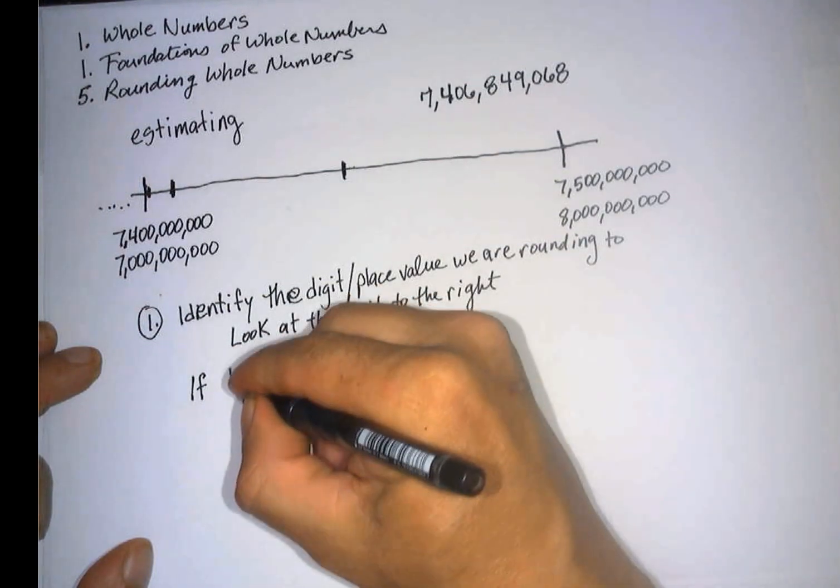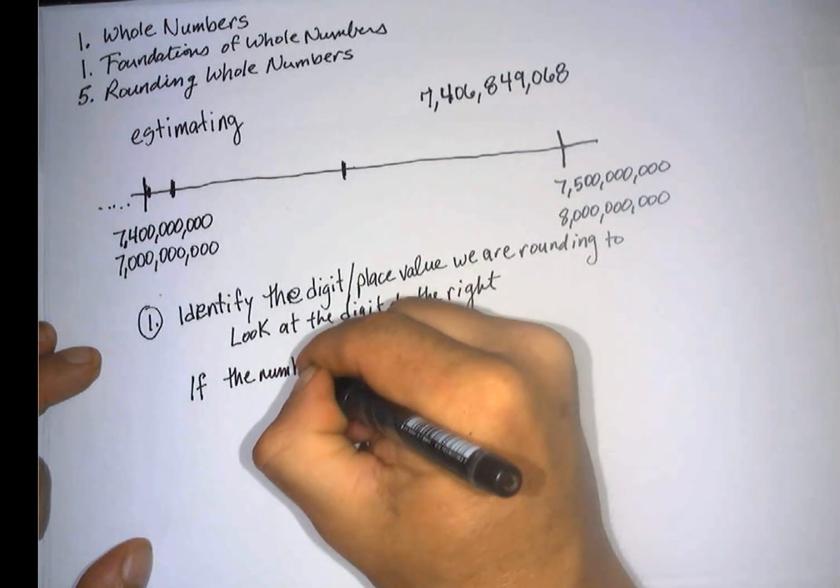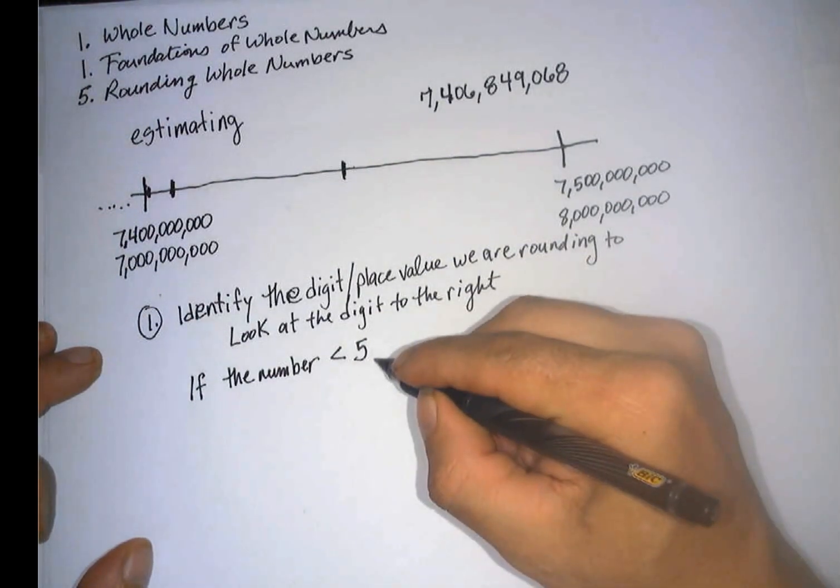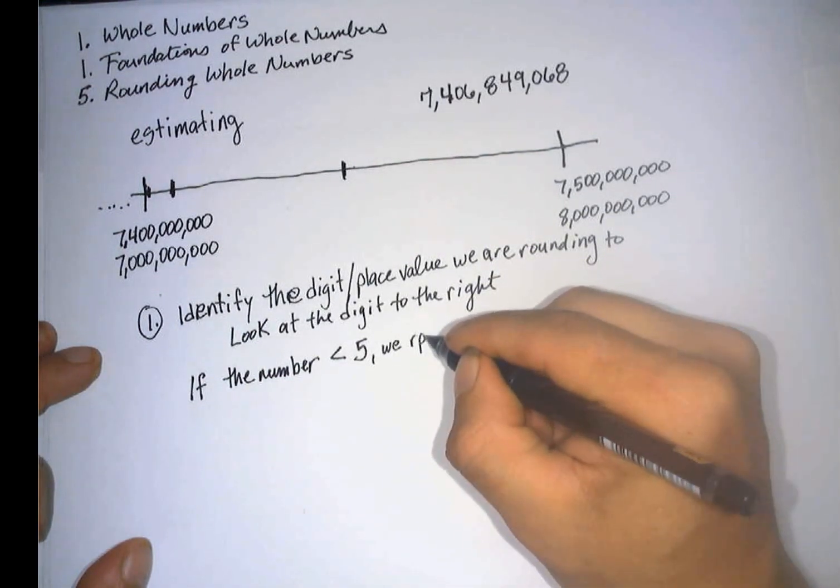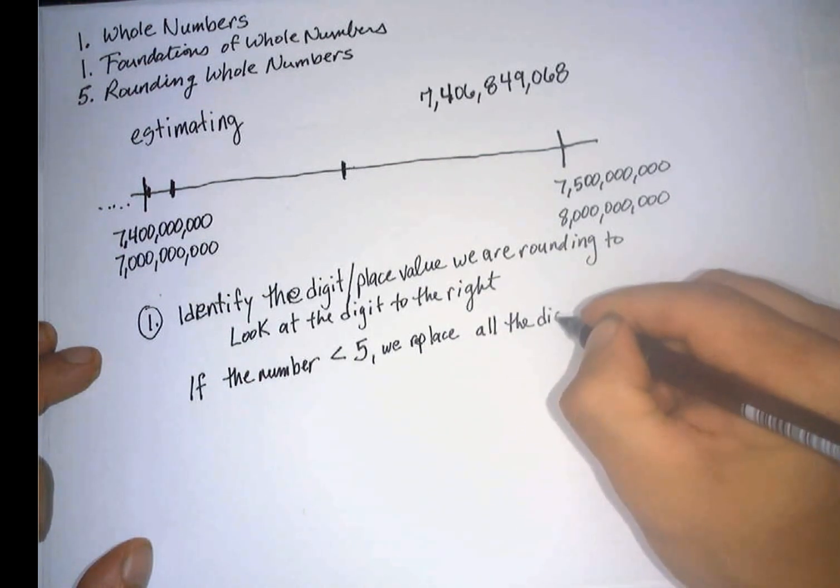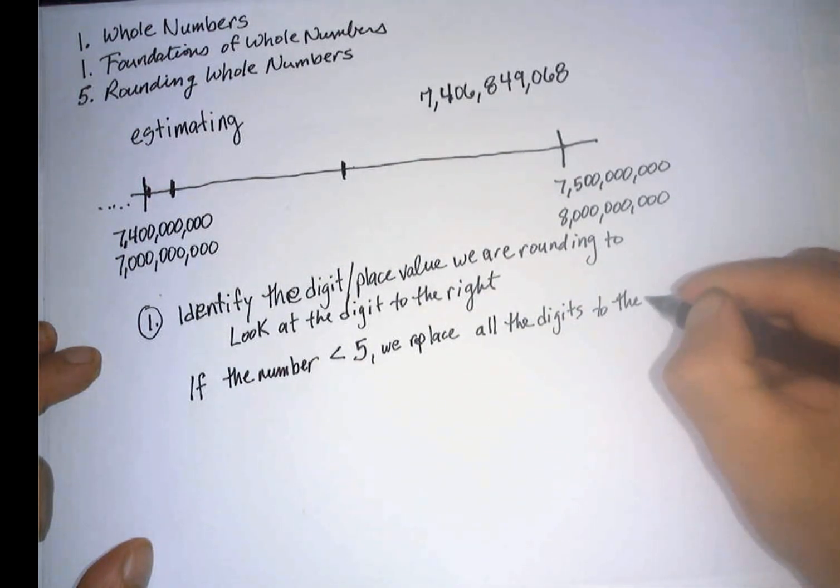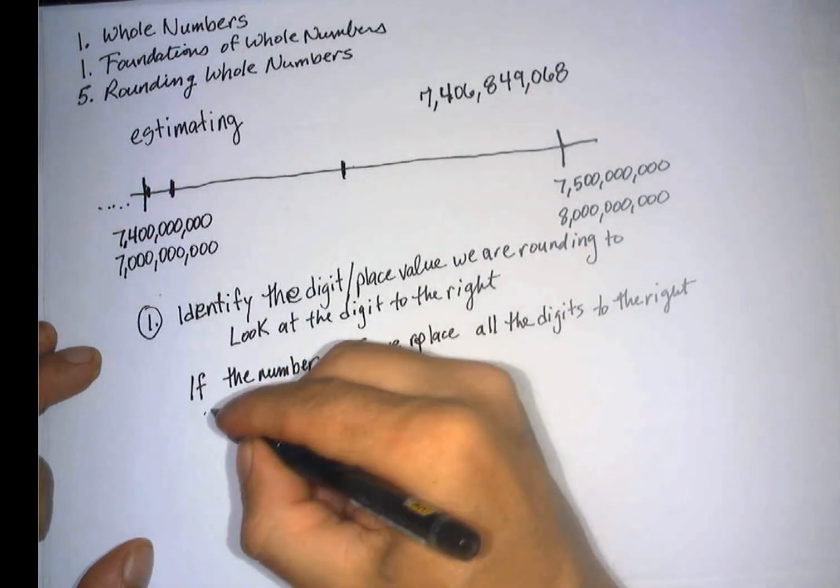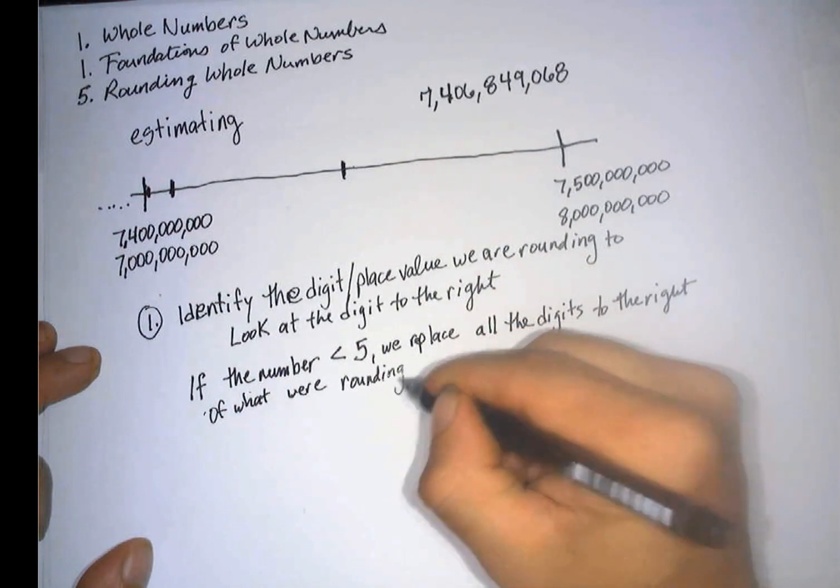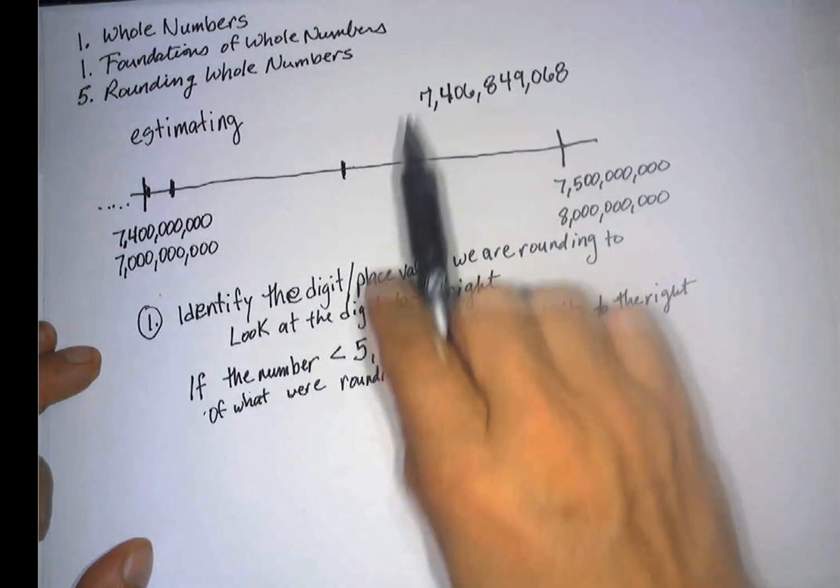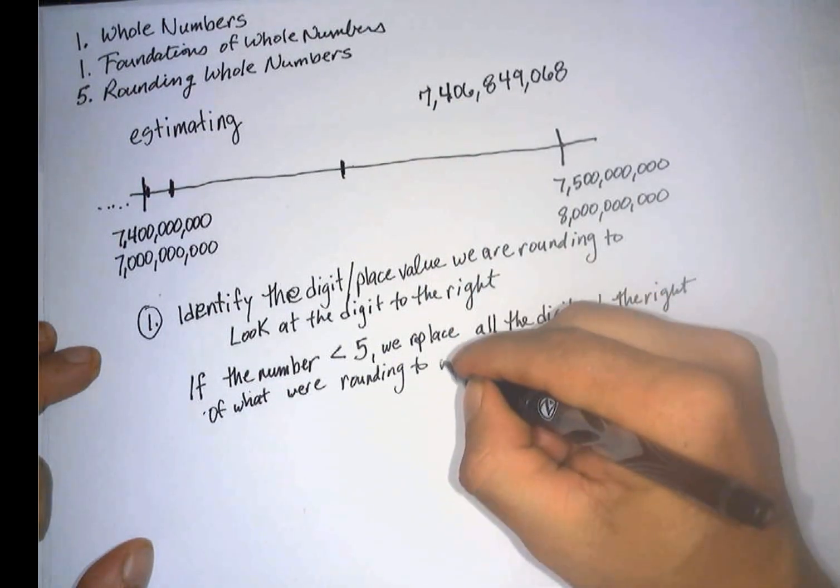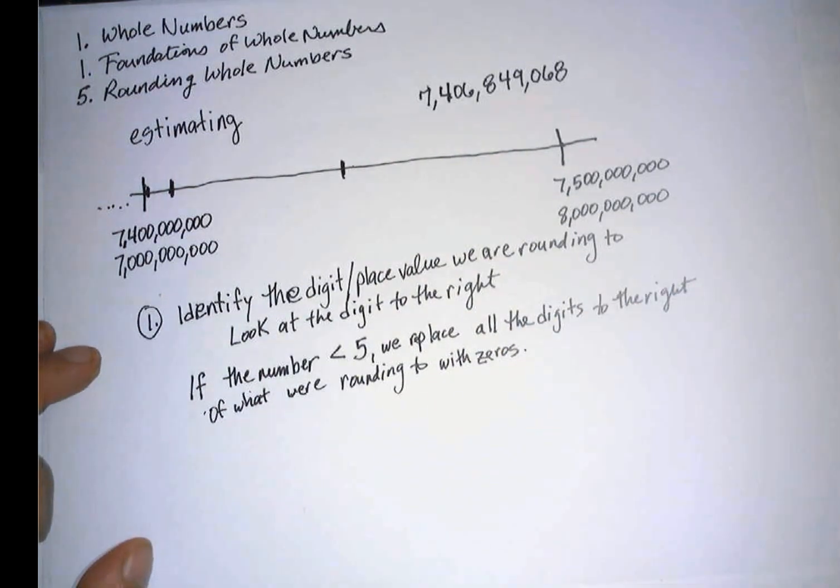If the number is less than 5, zero through 4, we replace all the digits to the right of what we're rounding to with zeros. So in other words, if we're rounding this to the billions, all these digits are going to be zeros. And that's it, and that's what we would do in this case.